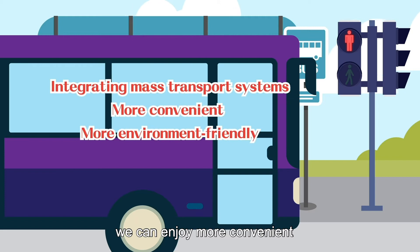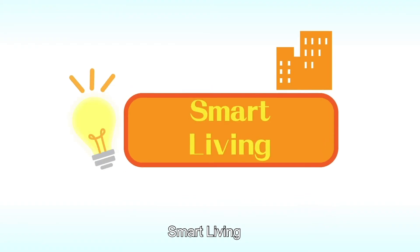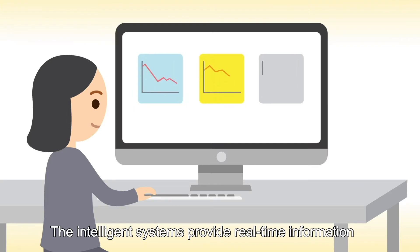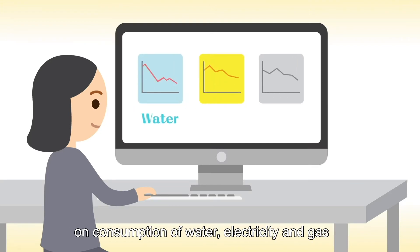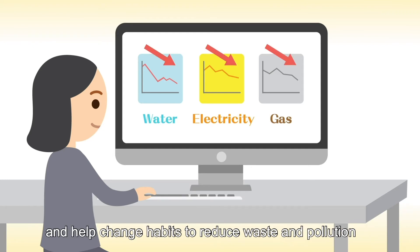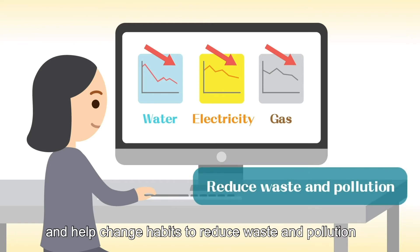By integrating mass transport systems, using clean energy vehicles, and building bicycle and walk-friendly environments, we can enjoy more convenient and environmentally friendly mobility. Smart living: intelligent systems provide real-time information on consumption of water, electricity, and gas, which will allow users to know their energy consumption and help change habits to reduce waste and pollution.